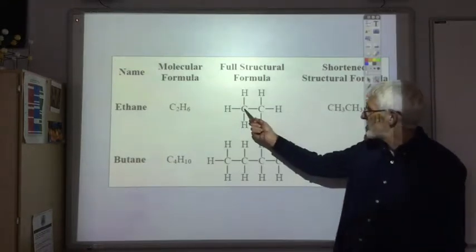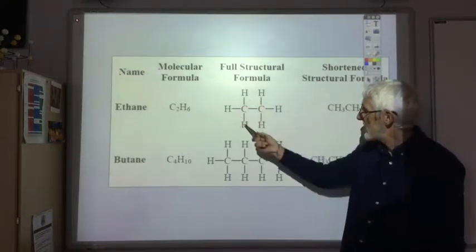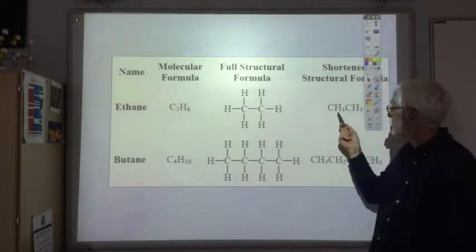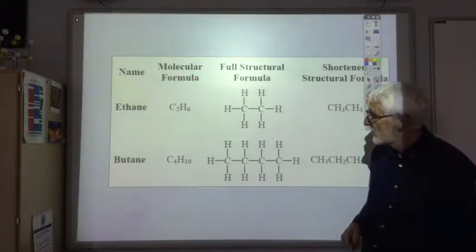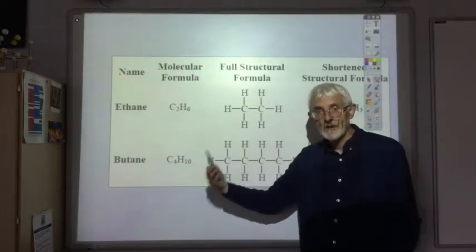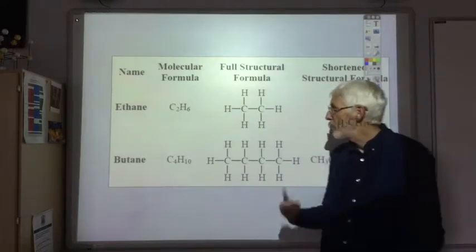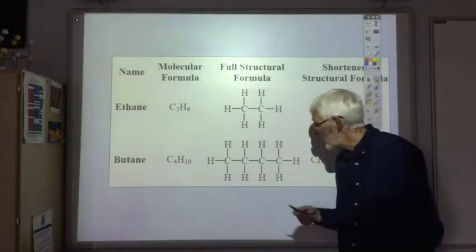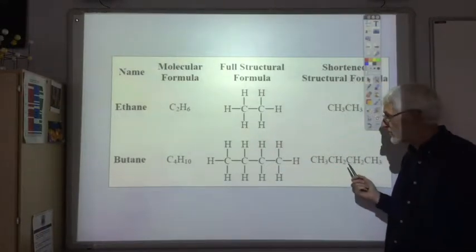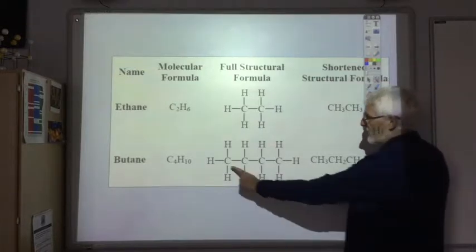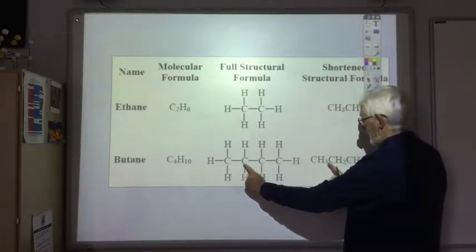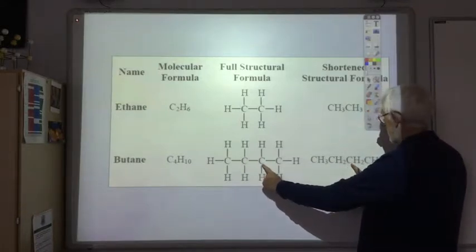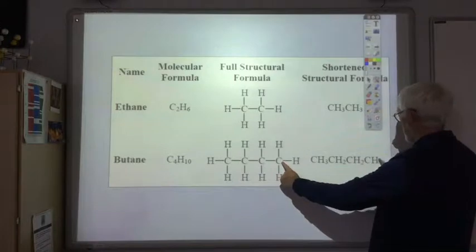So CH3 refers to the first carbon attached to three hydrogens, and then the second carbon is also attached to three hydrogens, so CH3CH3. For butane, molecular formula C4H10, the full structural formula shows how all the atoms are joined together, and that information is also given in the shortened structural formula. The first carbon is attached to three hydrogens, the second carbon is only attached to two hydrogens, as is the next carbon, and then the end carbon has got three hydrogens.